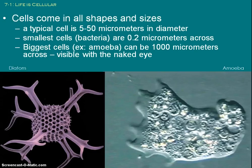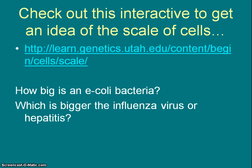Cells themselves come in tons of shapes and sizes, anywhere from 0.2 micrometers to close to 1,000 micrometers. Typical cells are going to be 5 to 50 micrometers. To give you a better idea of what that scale means, I'm going to have you pause me and go check out this website: learn.genetics.utah.edu. If you just type in learn genetics and cells and scale, you can probably get there too.